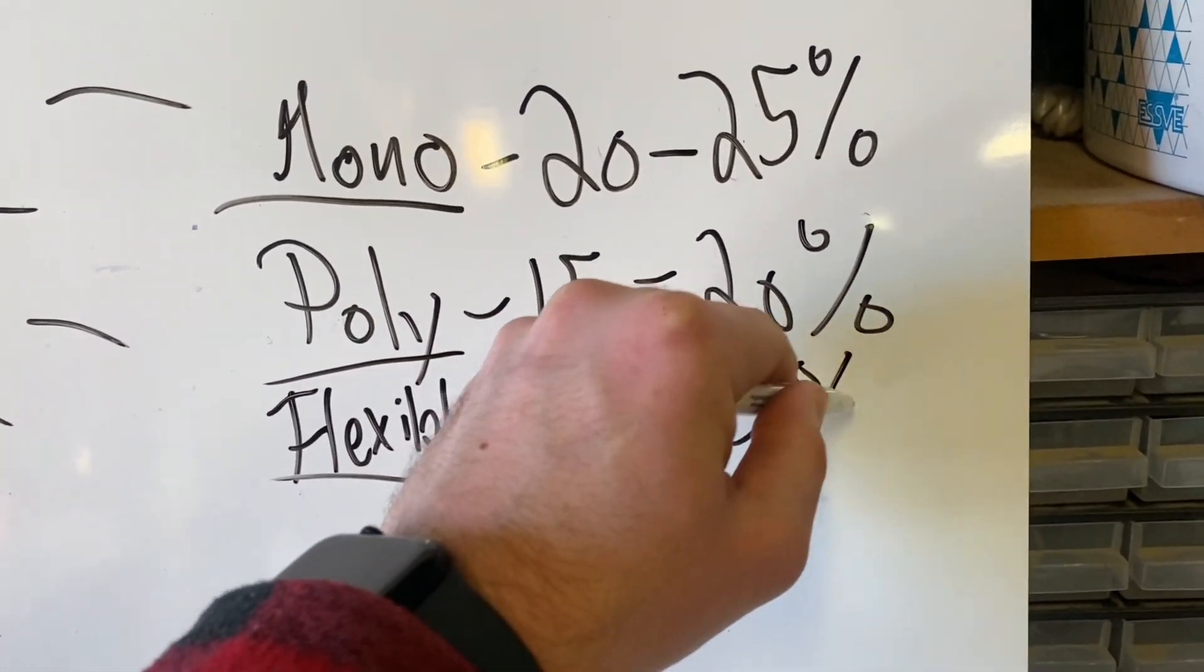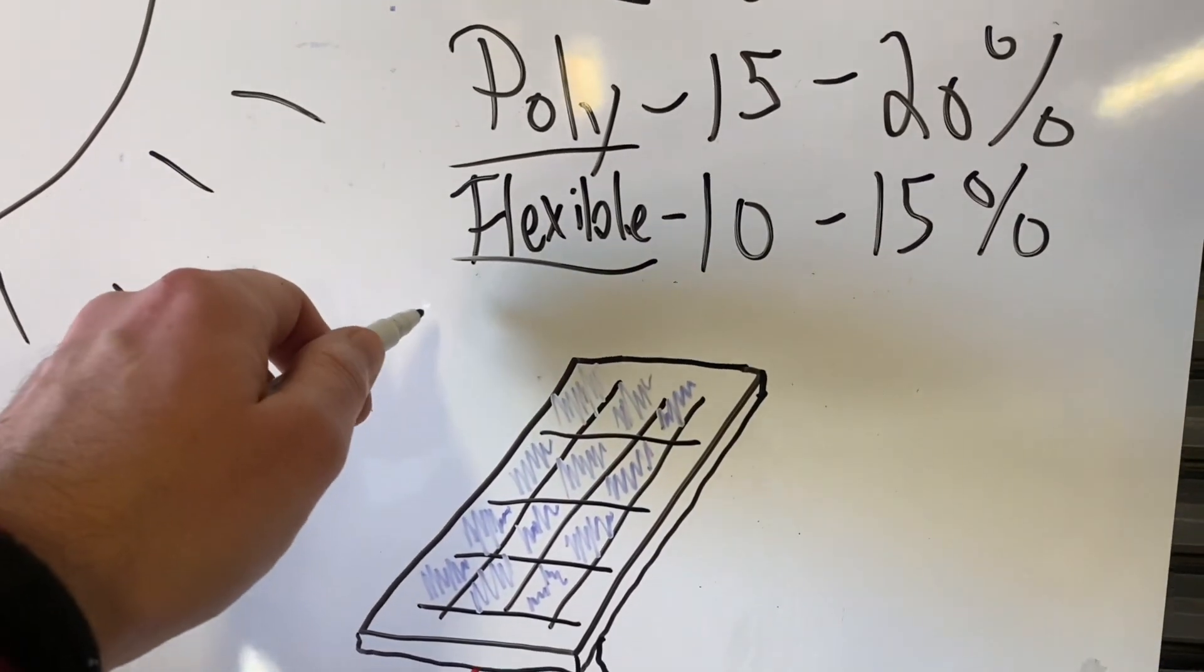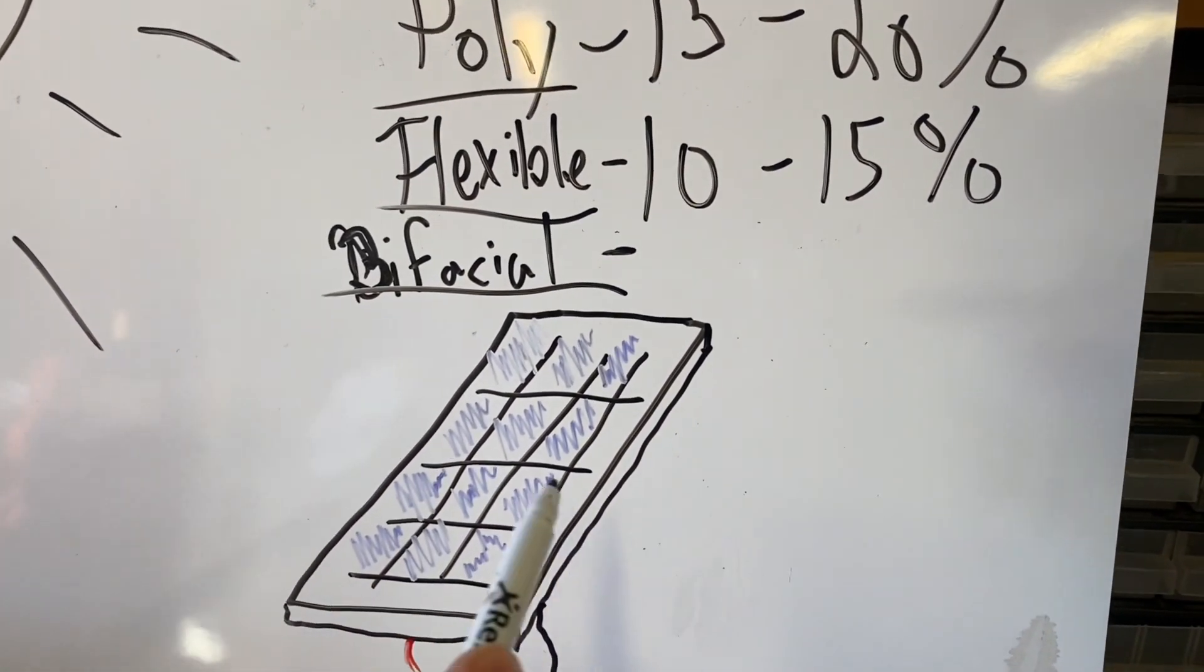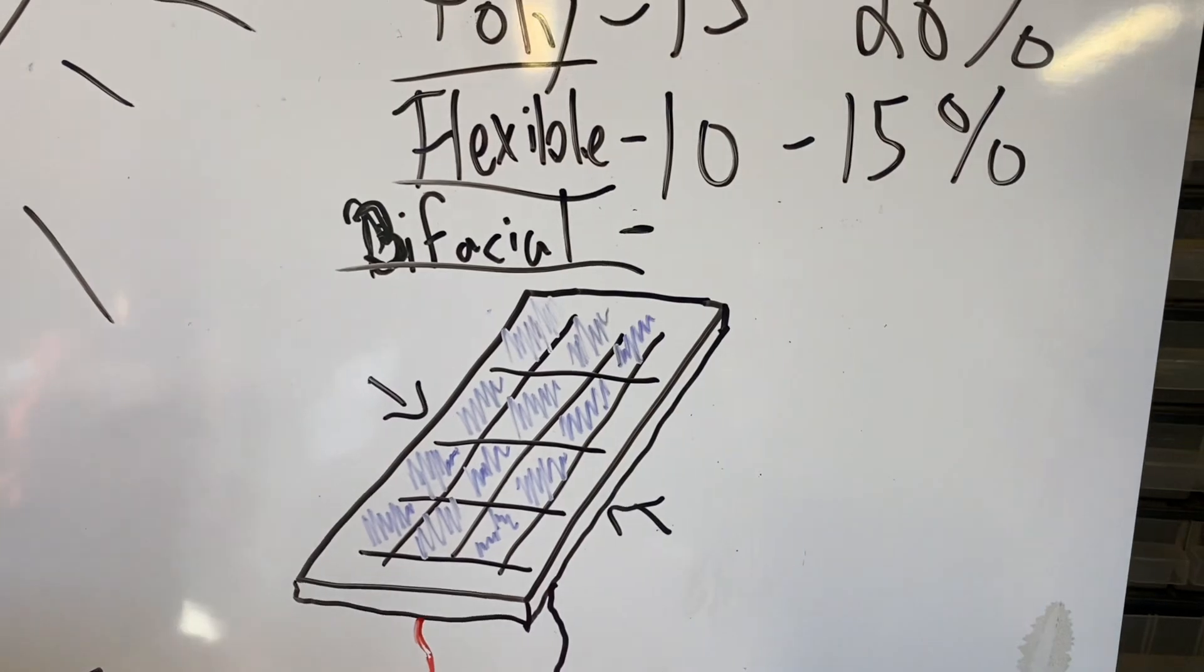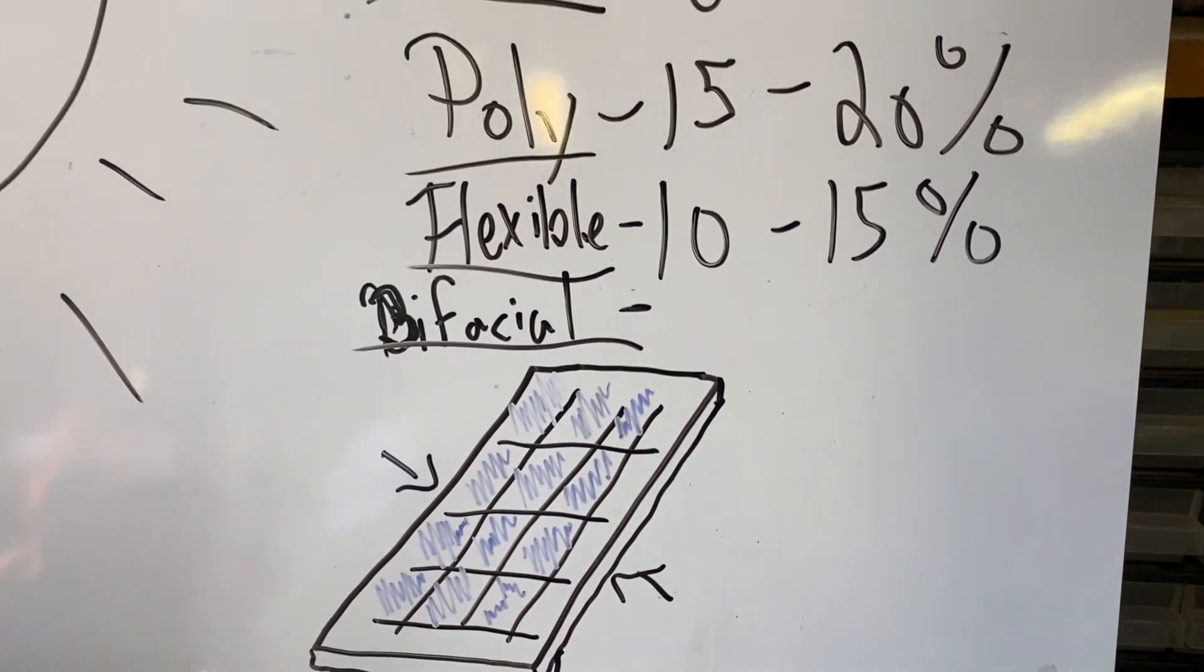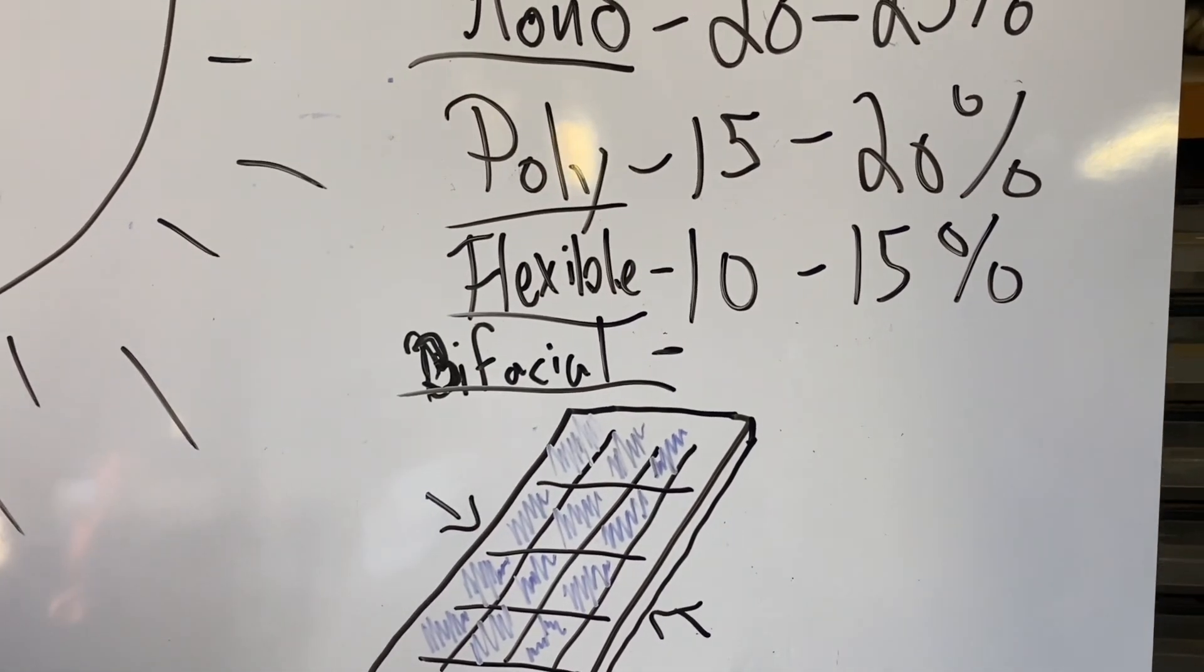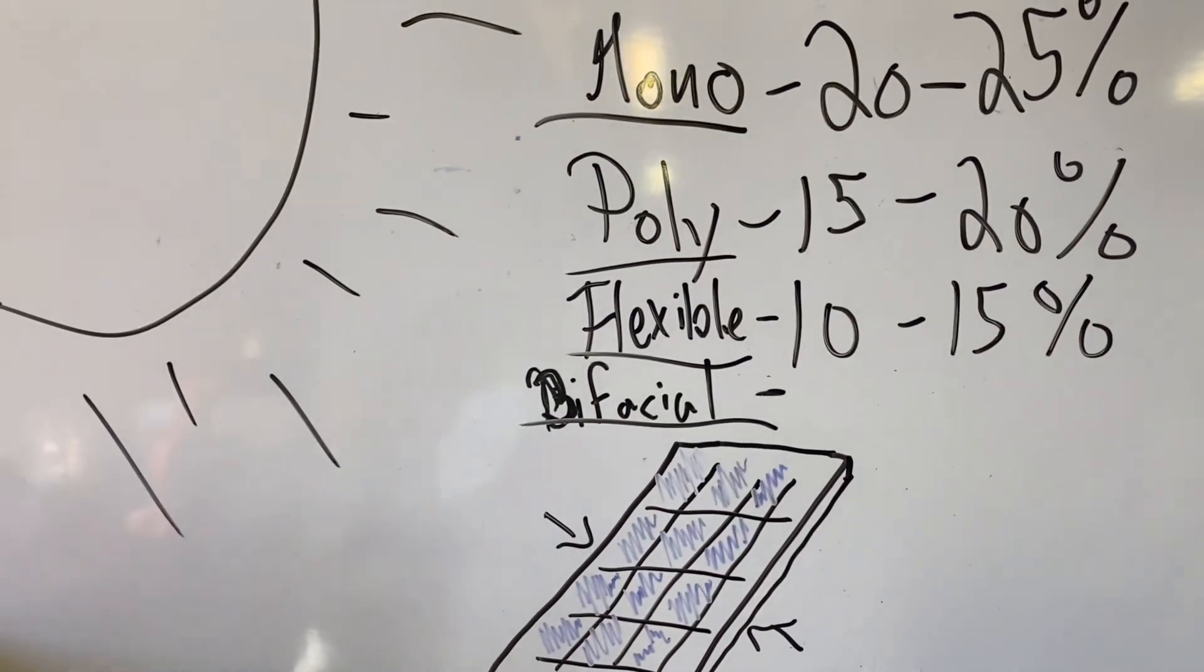Then you got your bifacial solar panels. They absorb sunlight from both sides, meaning they can generate more power per panel compared to the traditional ones. They are great for ground mounted setups or other areas with reflective surfaces like snow or even sand.